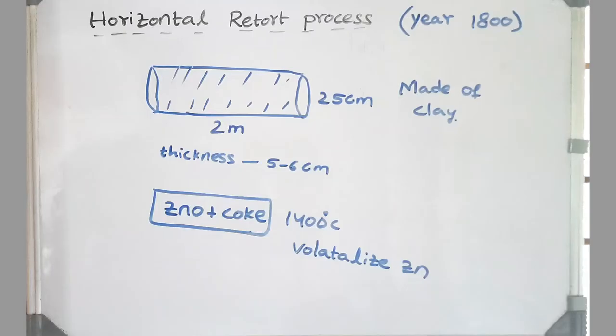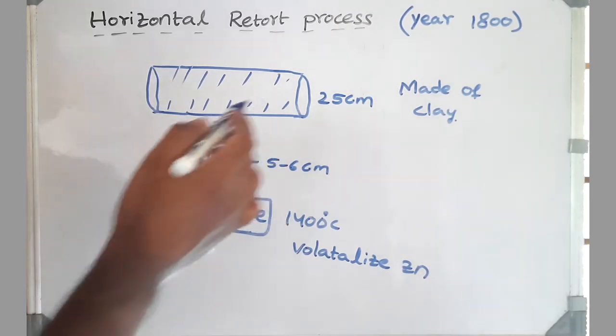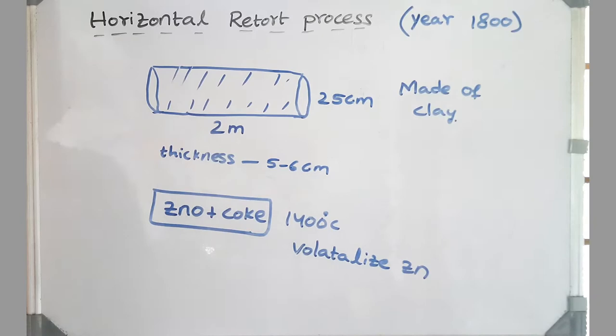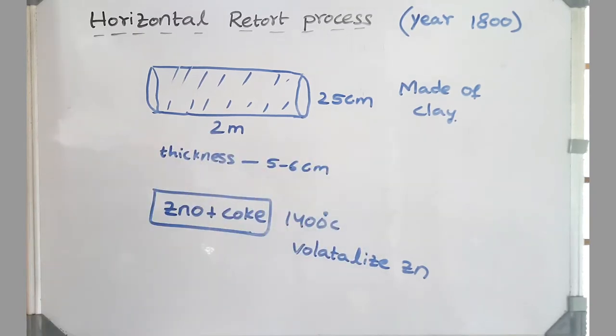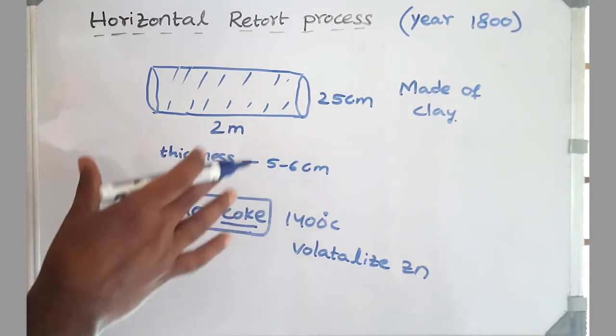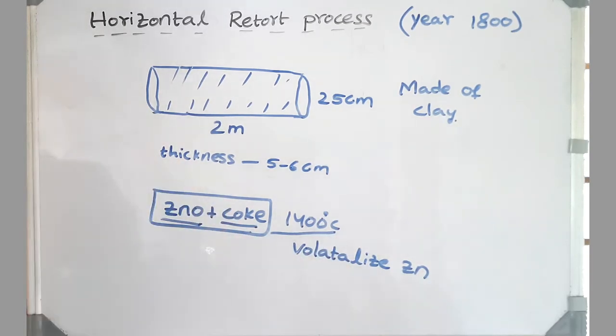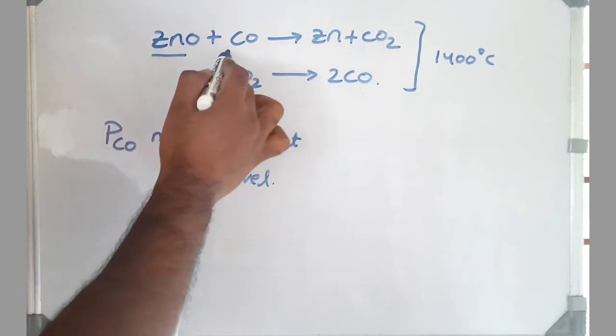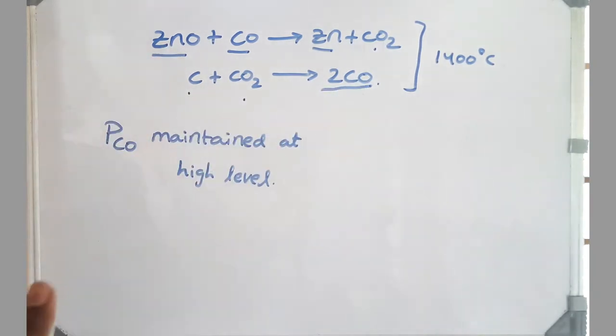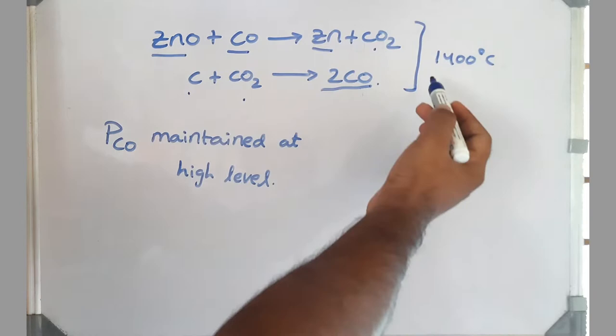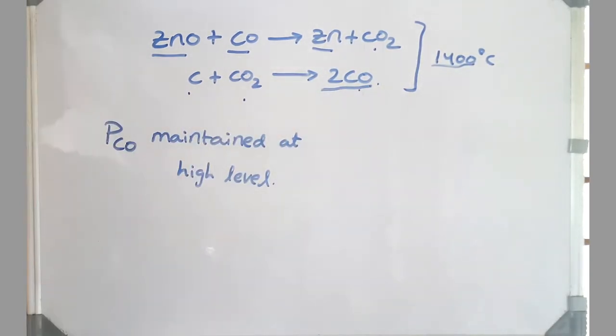Friends, horizontal retort process has started in 1800s. So the modification of this process is vertical retort process. Let's look at horizontal retort process. It is very small: 2 meter long and 25 centimeter diameter, with thickness of 5 to 6 centimeters, and this retort is made of clay. Friends, here we don't make any metallic retort because zinc forms alloys with almost many metals when heated, so we stick to clay. This is the initial adaptation. Here raw material ZnO agglomerate and coke both are introduced, and at 1400 degrees centigrade zinc vaporization takes place. The main reactions are: ZnO reacts with carbon monoxide giving zinc and carbon dioxide, and this carbon dioxide is being consumed by carbon forming 2CO. This is similar to the Boudouard reaction in our iron making blast furnace, because at 1400 degree centigrade carbon monoxide is more stable.